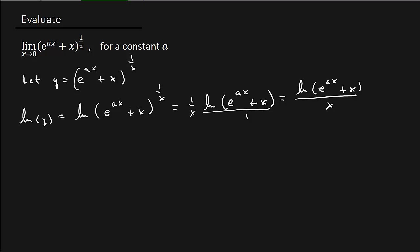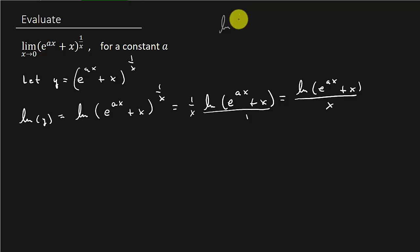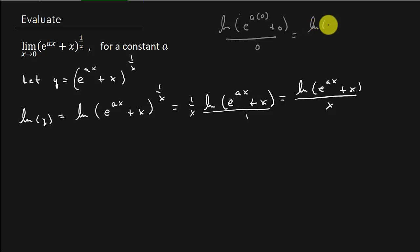So this is going to be good because if we plug 0 in for X here, we get the natural log of E raised to A times 0 plus 0, over 0 — which is the natural log of 1 over 0, which is 0 over 0. So we got the 0 over 0 form, which means we can apply L'Hôpital's rule.